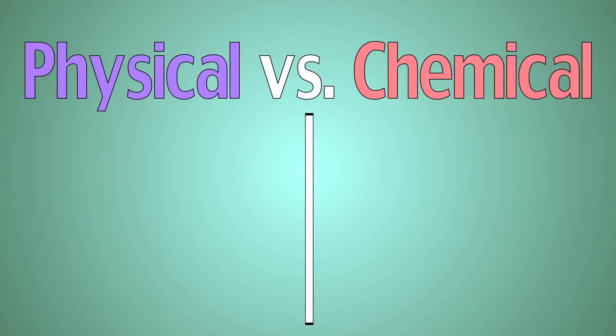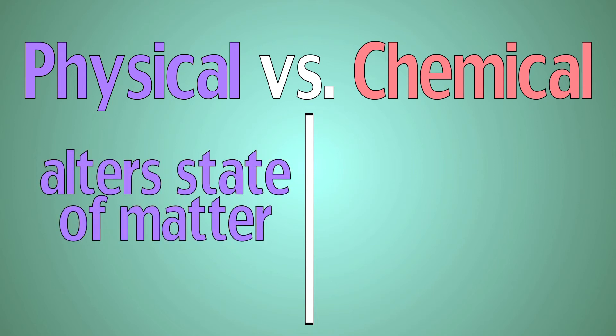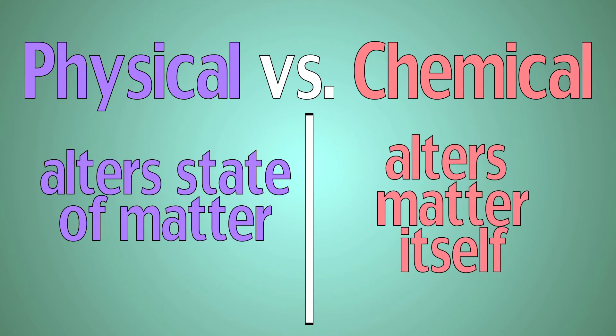It is important to understand the difference between a physical and chemical change. A physical change alters the state of matter, while a chemical change alters the matter itself, creating an entirely new substance.